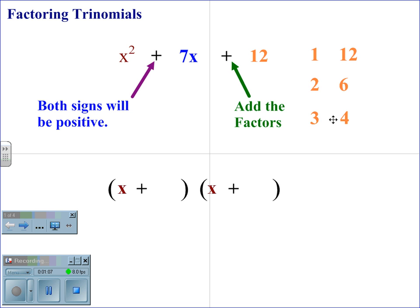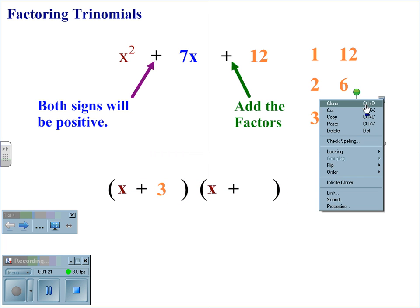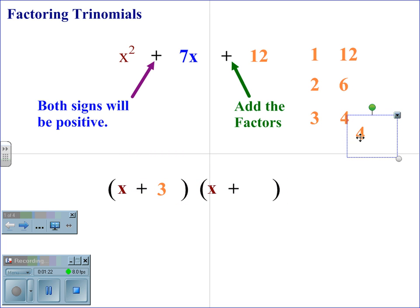We are adding the factors. Therefore, 3 and 4 add up to the middle term, the b term, which is 7. Therefore, 3 and 4 are now placed in the parenthesis, and we get factors of x plus 3, x plus 4, for the trinomial x squared plus 7x plus 12.